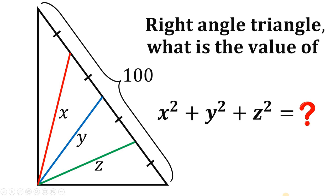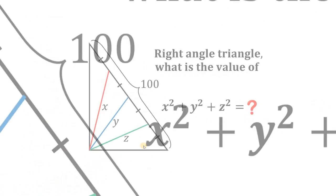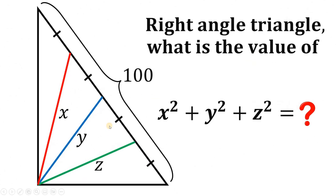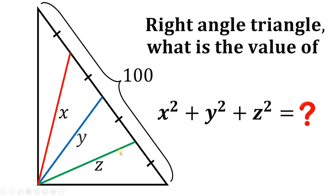Can you solve this geometry challenge? Here's the question. Given this right triangle with a hypotenuse of 100 units, this red segment with a length x, this blue segment with a length y, and this green segment with a length of z, the question is: what is the numerical value of x squared plus y squared plus z squared?